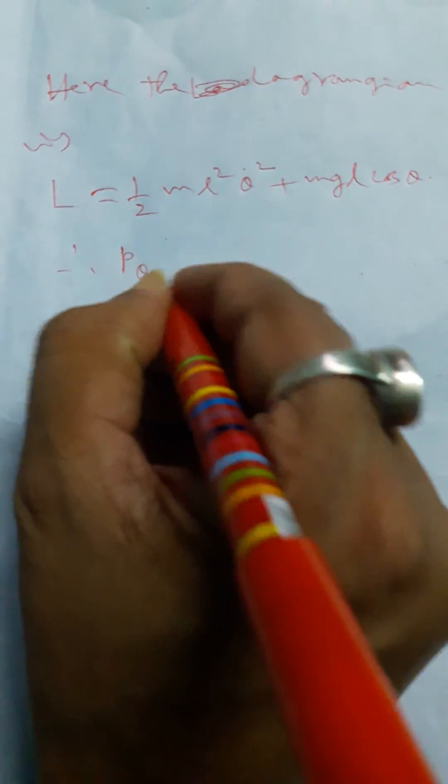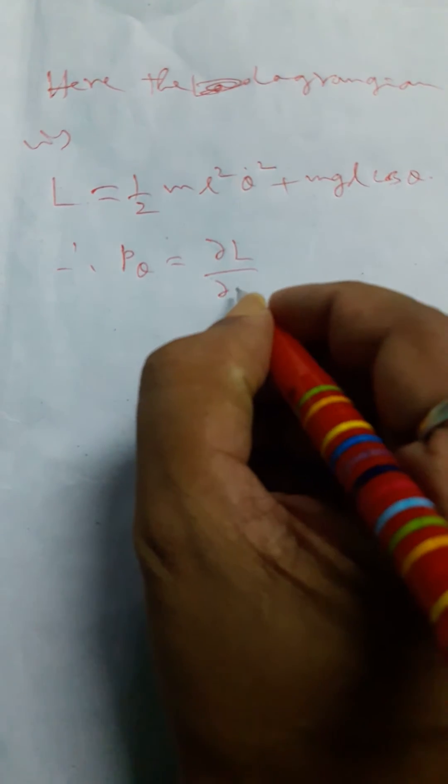Therefore, we have to find, we set ∂L/∂θ̇ as P_θ. Therefore, P_θ equals, if theta is the generalized coordinate of Lagrangian, ∂L/∂θ̇.